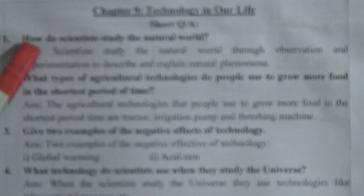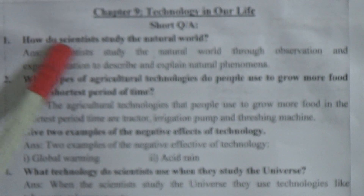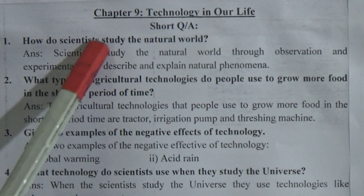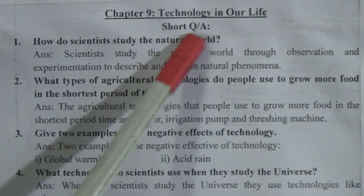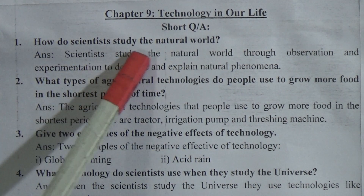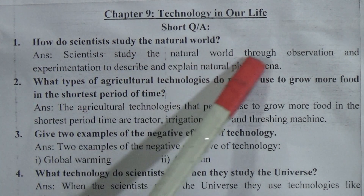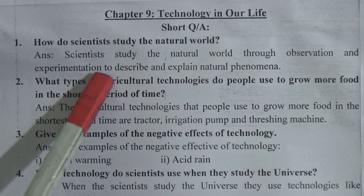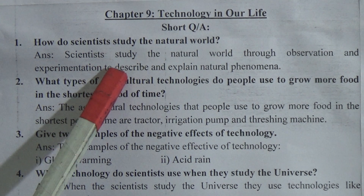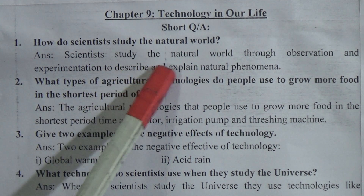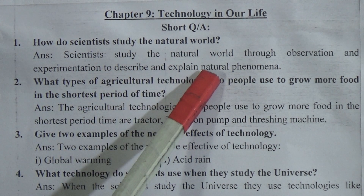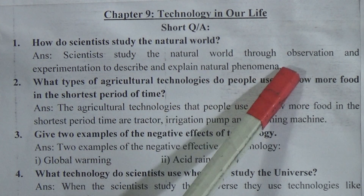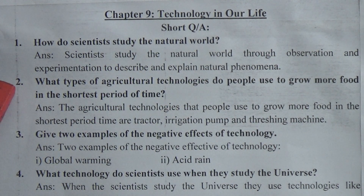Short question answers. Question 1: How do scientists study the natural world? Answer: Scientists study the natural world through observation and experimentation to describe and explain natural phenomena.